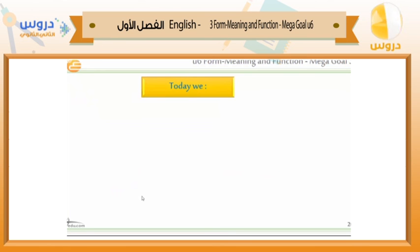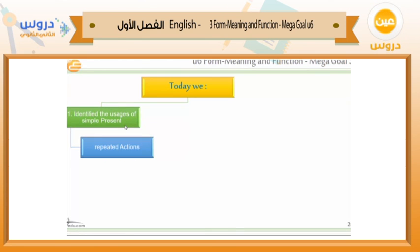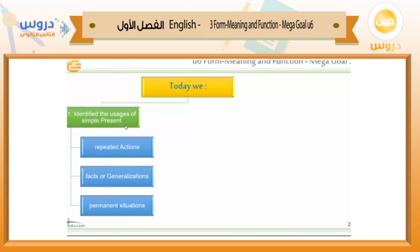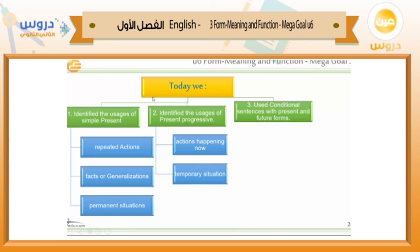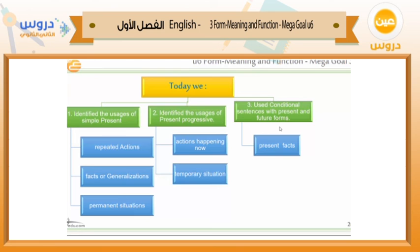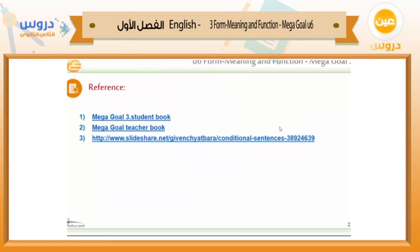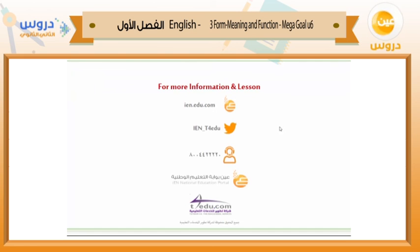This is the end of today's lesson. We identified the usages of simple present — we can use it with repeated actions, facts or generalizations, and permanent situations. We identified the usages of present progressive — it can be used with actions happening now and temporary situations. We used conditional sentences with present and future forms — with present facts, future facts, and may and might. Thank you for listening. Wassalamu alaikum wa rahmatullahi wa barakatuhu.